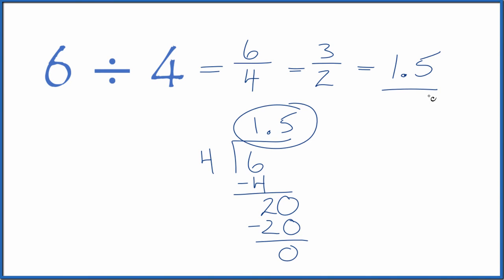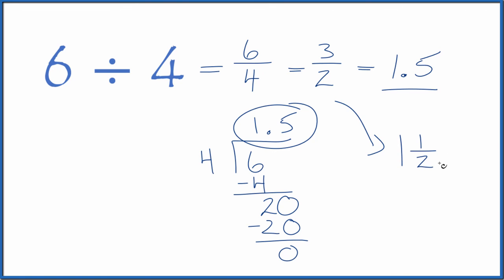So when you divide 6 by 4, you could consider it a fraction — 6 fourths or 3 halves — and then divide to get a decimal. Do note that these are improper fractions, and they are equal to the mixed number 1 and 1 half, which is the same thing as 1.5.